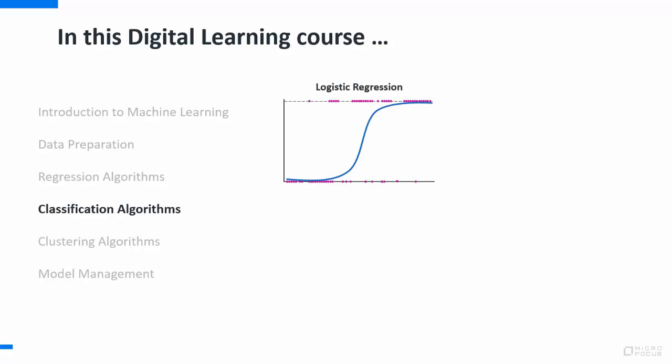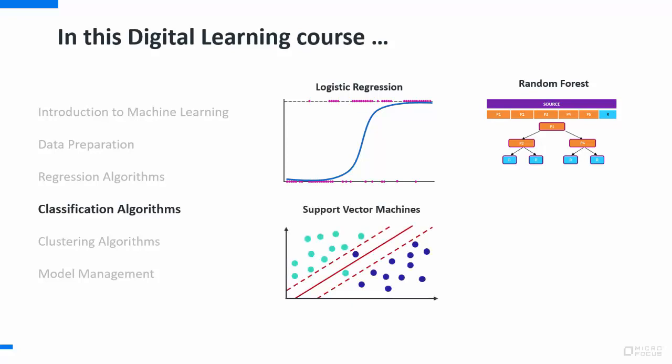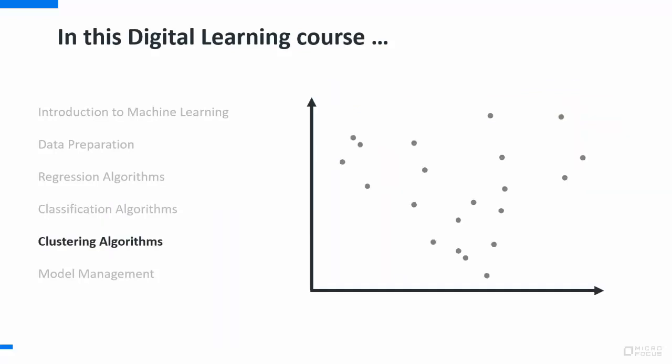Logistic regression, which is used to determine the likelihood of binary outcomes. Random forest for classification, which uses multiple decision trees to vote on the outcome of a classification. Support vector machines for classification, which assigns a data point to a specific set. And Naive Bayes, which builds a conditional probability model of your data, allowing you to determine how much you should trust a categorization.